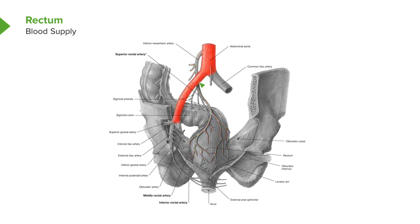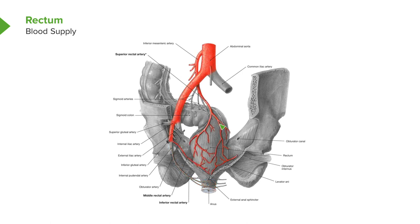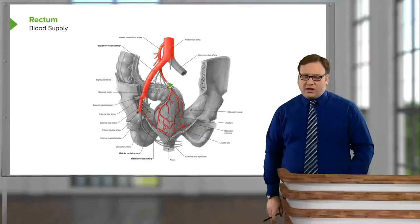Following the internal iliac, we can see it gives rise to the obturator artery passing through the obturator canal, and gives rise to the internal pudendal running down to give branches supplying the anal canal region. Concentrating on the 60% of people who have a middle rectal artery, we can see it passes down with many connections between the middle rectal and the superior rectal, supplying the superior, middle and potentially the lower portions of the rectum. The anal canal itself is supplied by a branch from the internal pudendal.